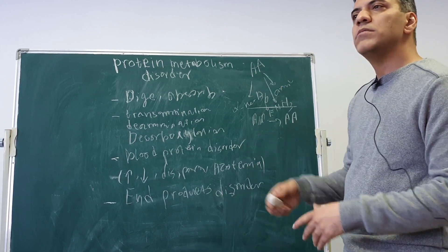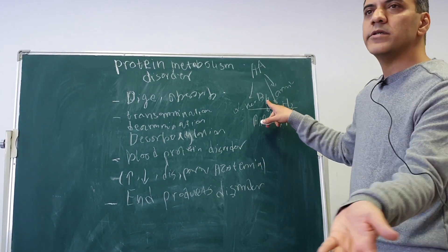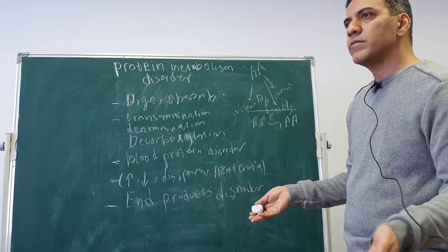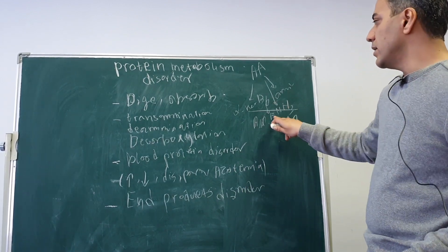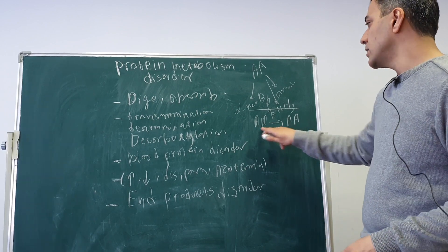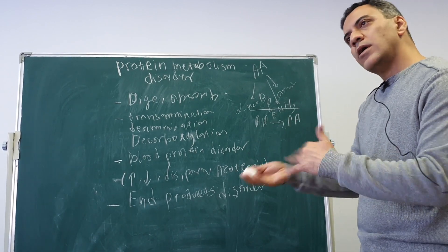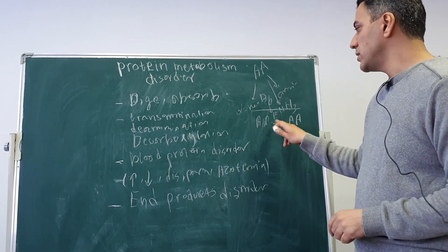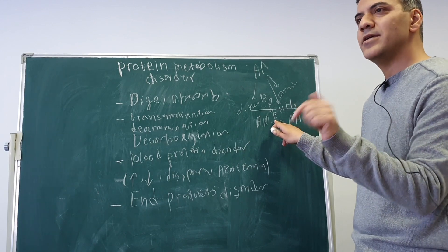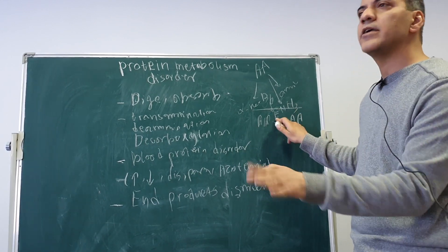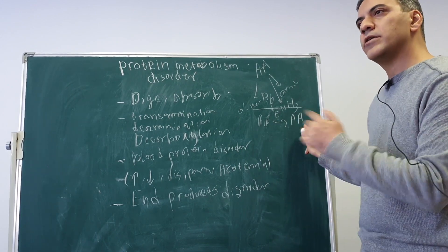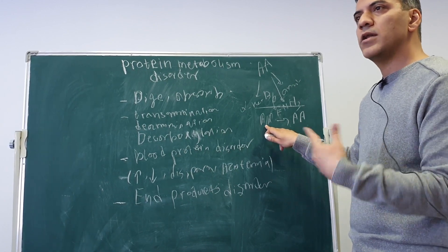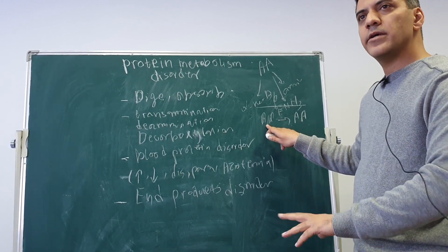How can transamination be disordered? If there is no vitamin B6 — due to low intake or loss of vitamin B6, for example in pregnancy — then these enzymes will be non-functional, and transamination will not occur in our body. This process can also be hereditary — if the enzyme is absent hereditarily, then this amino acid cannot be converted into another. This amino acid will be accumulated in our body, in fluids, in blood, in the brain, and will be excreted with urine.